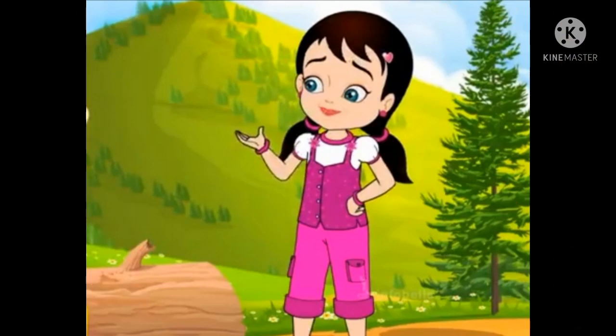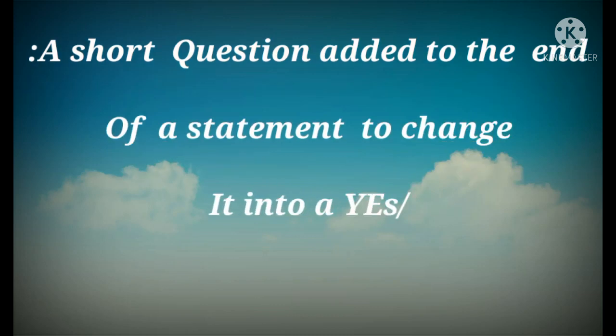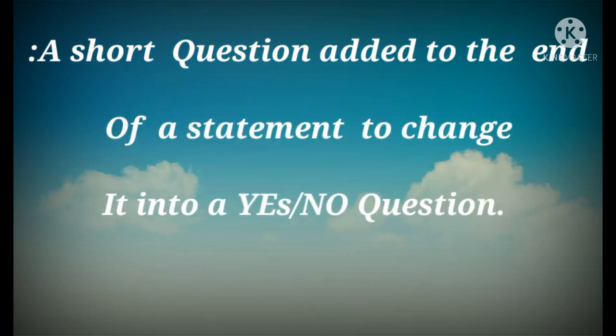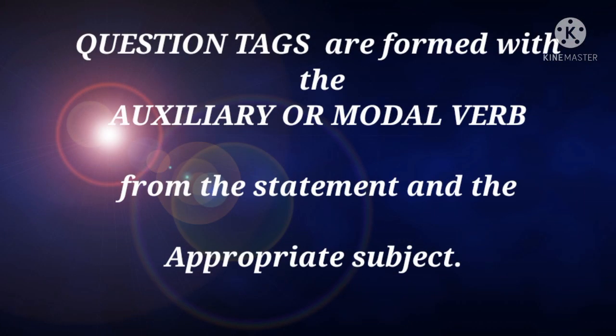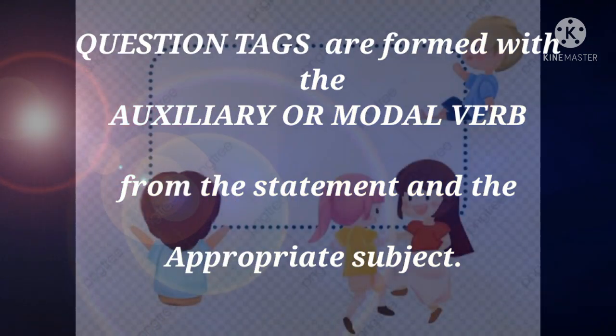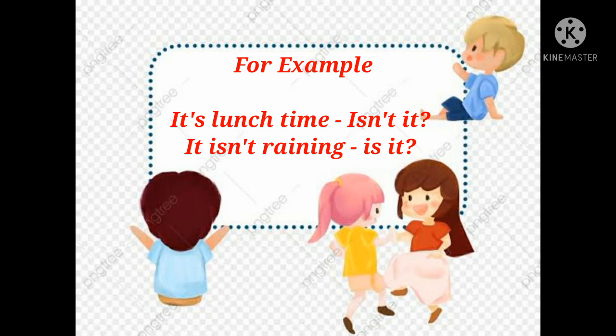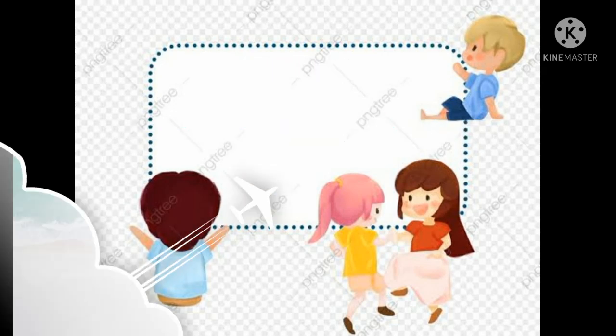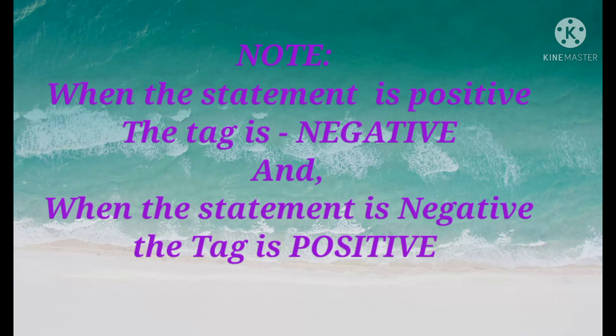Let us see what is a Question Tag. A short question is added to the end of your statement to change it into a yes-no question. Question Tags are formed with the auxiliary or modal verb from the statement and the appropriate subject. For example, it's lunchtime, isn't it? It is not raining, is it? Notice that when the statement is positive, the tag is negative, and when the statement is negative, the tag is positive.